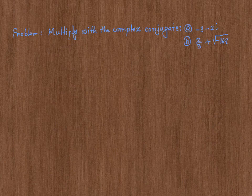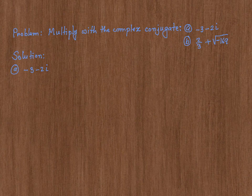In this video, I am going to do some multiplication involving complex conjugates of a complex number. Let's start off with the first problem: negative 3 minus 2i. First, we need to find the conjugate of this number.